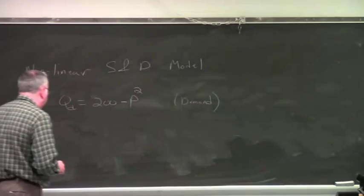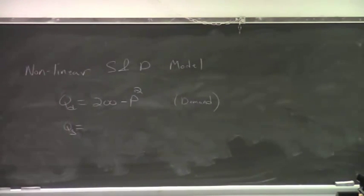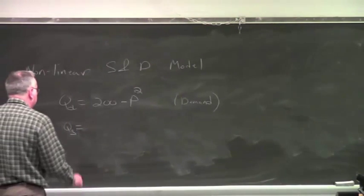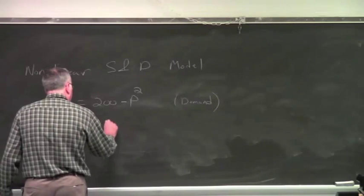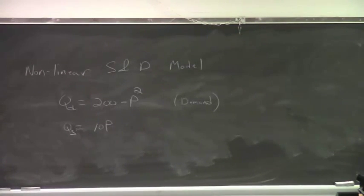And let our supply function, our supply curve, be simply Qs equals 10P. For this equation right here, what is the vertical intercept of the supply curve? Zero. Notice there is, though, a vertical intercept. So in other words, the vertical intercept is supposed to be zero.